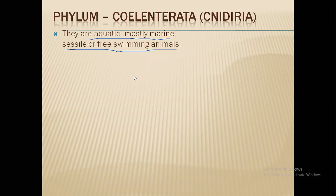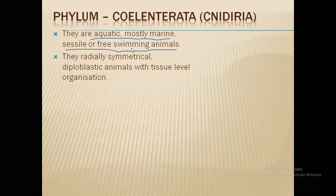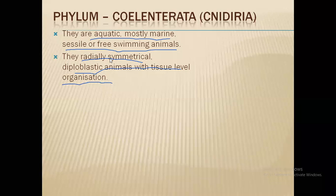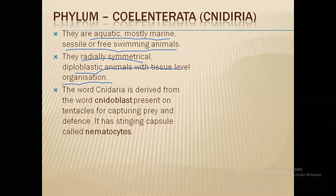They are radially symmetrical, diploblastic animals having tissue level organization. Radially symmetrical means if you cut their body through any radius, both sides will be the same. Diploblastic means they have two germ layers: an outer ectoderm and an inner endoderm. Tissue level organization means in their body you don't get to see an organ or organ system — they are more complex than Porifera but not as complex as higher phyla.